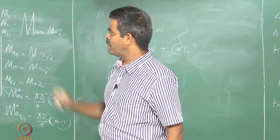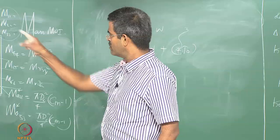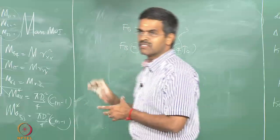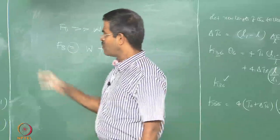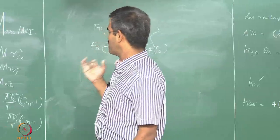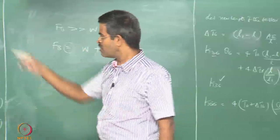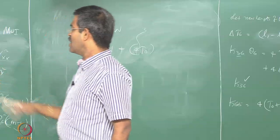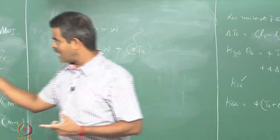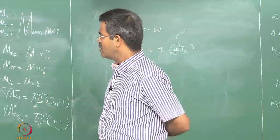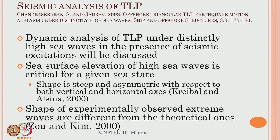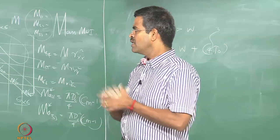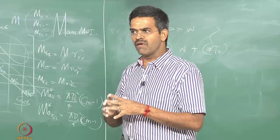A study on seismic analysis of TLP was done by myself and Gaurav in 2008, published in Ships and Offshore Structures. Dynamic analysis was done for TLP under distinctly high sea waves combined with seismic force. Seismic waves are created only when sea waves are distinctly high — there is a geographical interconnectivity. When the sea is calm there is no earthquake. The worst scenario is distinctly high sea waves combined with an earthquake, which could cause tether pullout.